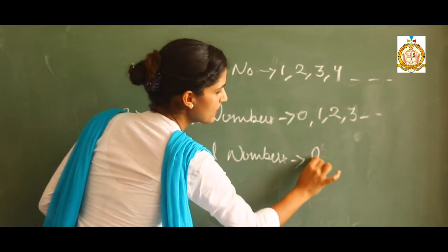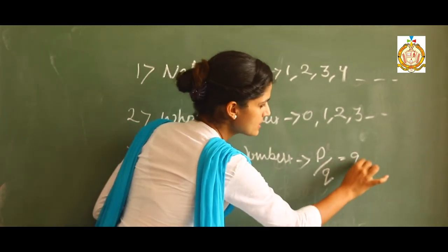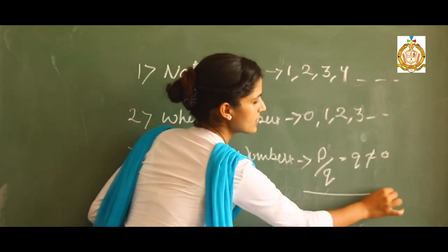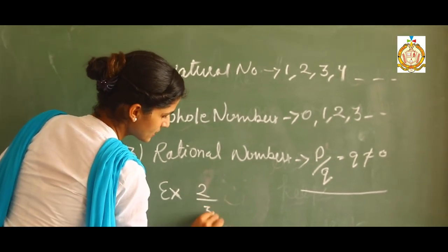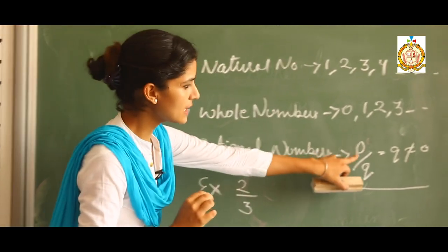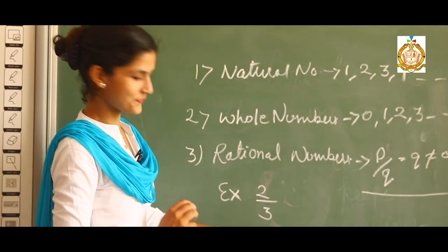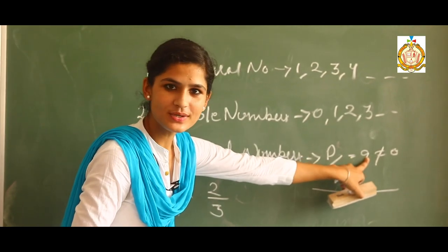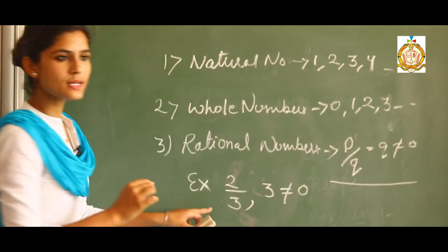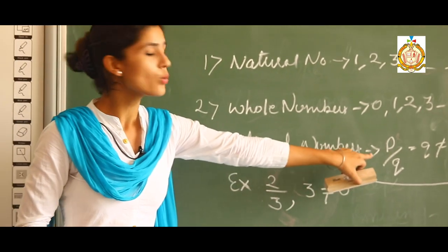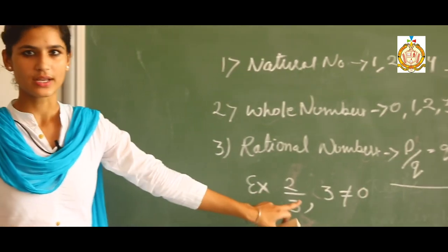In general, we say numbers which are of the type P over Q, where Q is not equal to zero, are called rational numbers. For example, 2 over 3: in place of P I write 2 and in place of Q I write 3. Q is not equal to zero, and 3 is not equal to zero. That is the property of rational numbers — those numbers of the form P over Q where the denominator Q should not be zero.